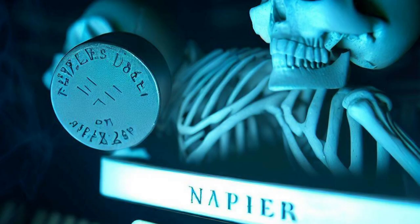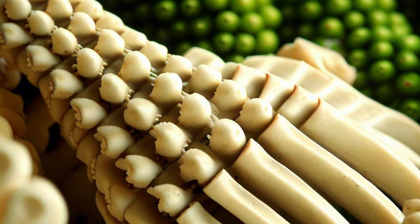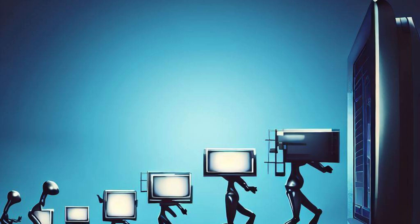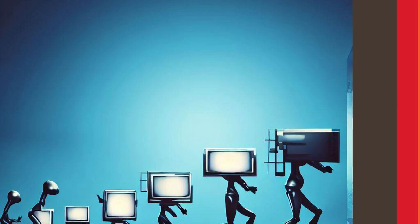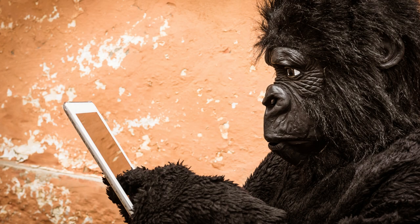Napier Bones also consists of 10 rods made with stripes of ivory bones. Single-digit multiplication can be done very fast when using Napier Bones. That covers the evolution of computers in manual computing devices.